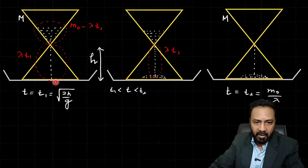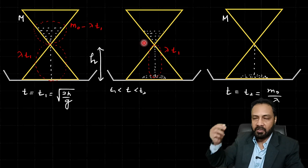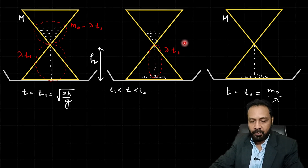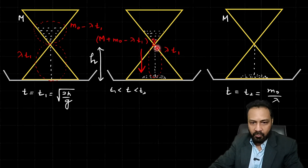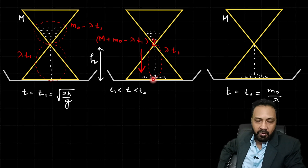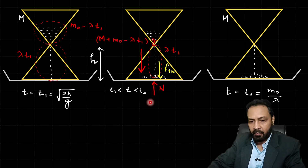The mass of the free-fall stream is λt₁, and this mass has no contact with the hourglass. So the weight supported by the hourglass (without the stream) is M + (m₀ − λt₁). However, sand particles are hitting the floor and instantaneously coming to rest, imparting impulse — so there is a thrust force f_thrust acting on the floor, which contributes to the normal reaction.